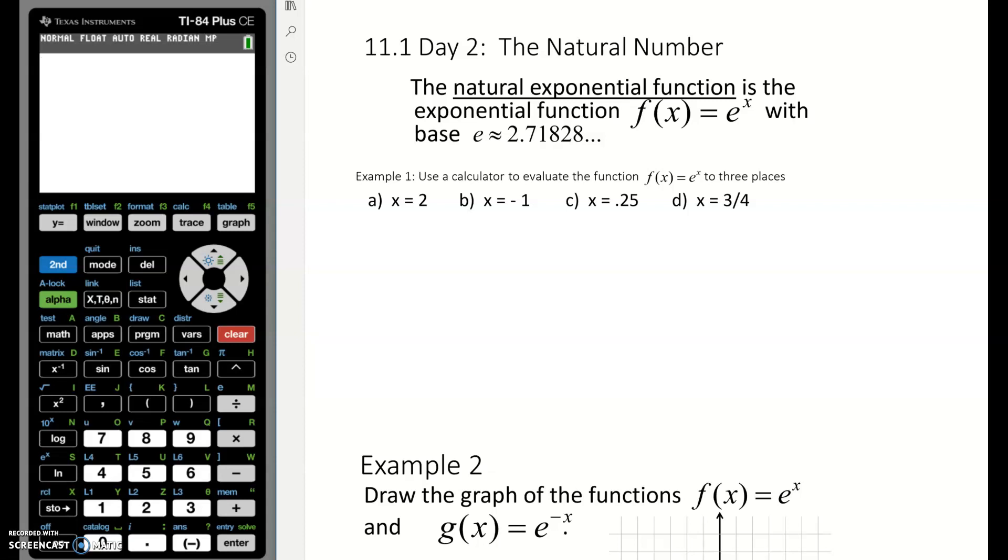The natural number e is a number that was discovered by Leonard Euler a long time ago. I could go into the details of where this number came from, but basically what you need to know is e is a number kind of like pi. It has a value, it's a decimal that keeps on going forever. Just like we approximate pi as 3.14, we approximate e as 2.71828, so about 2.72.